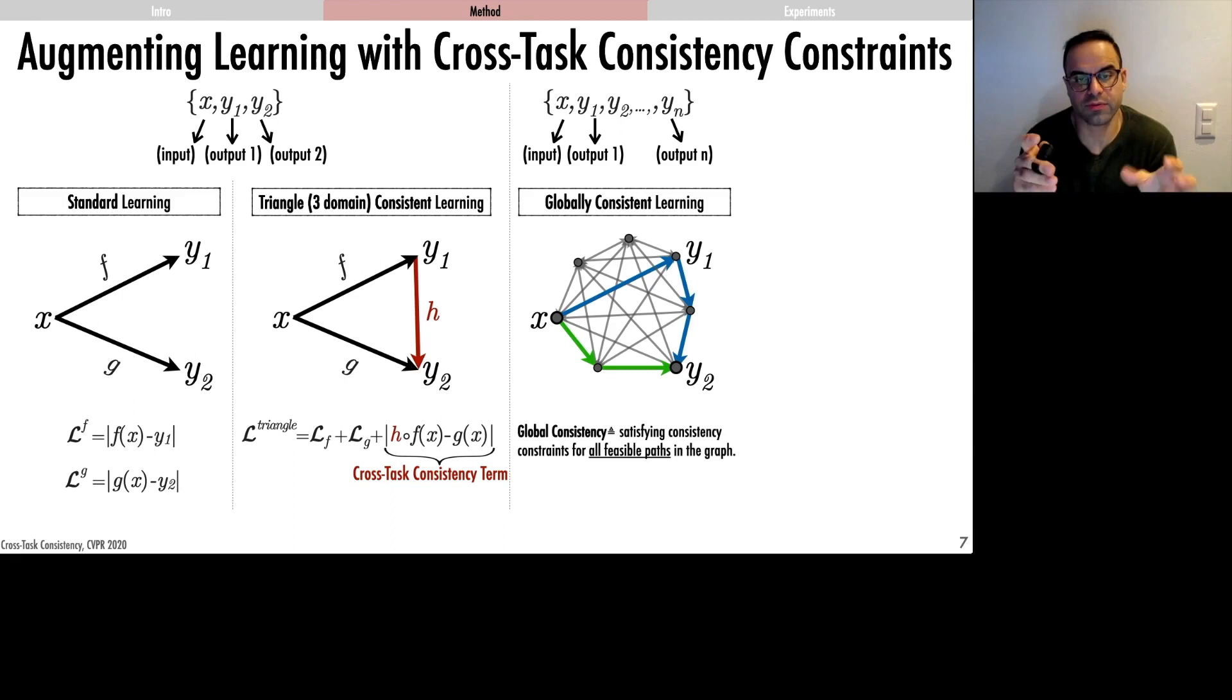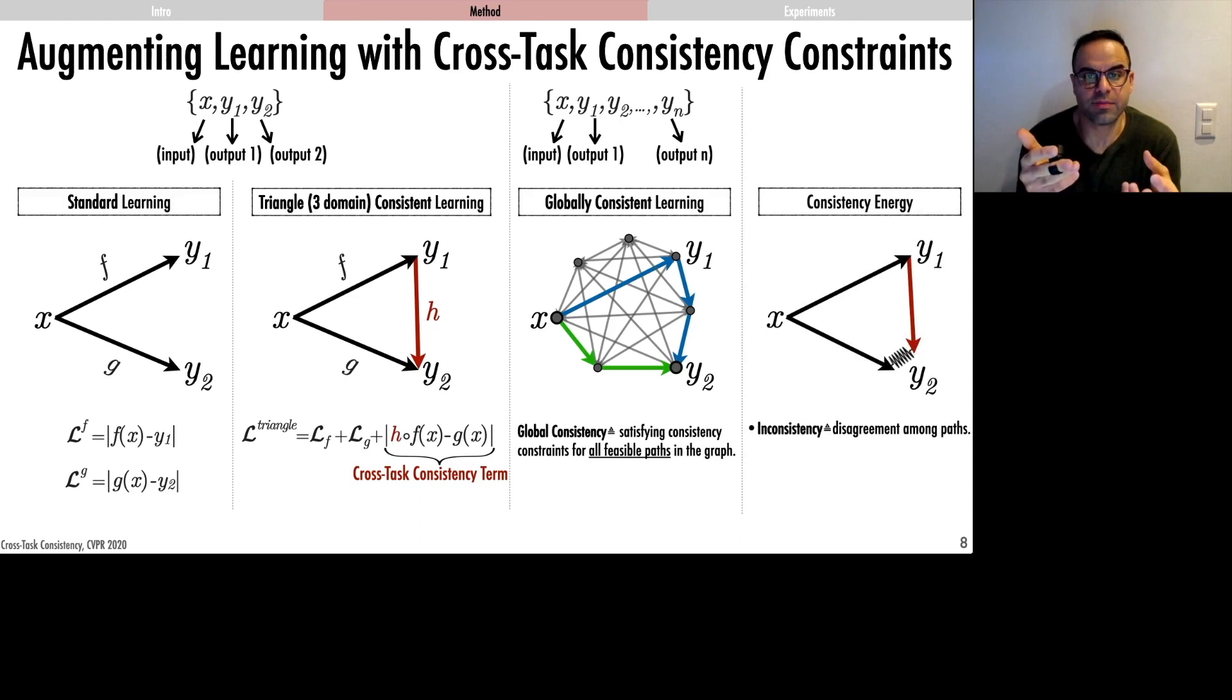Finally, we define the consistency energy. The inconsistency in the system can be quantified by measuring disagreement among the outputs of different prediction paths. We define consistency energy as the total amount of disagreement in the predictions made for one query. The lower the disagreement, the lower the energy.